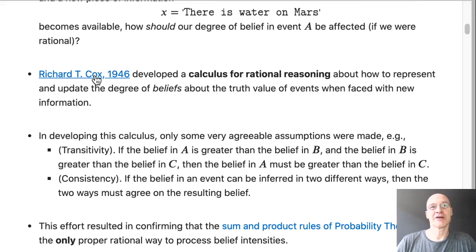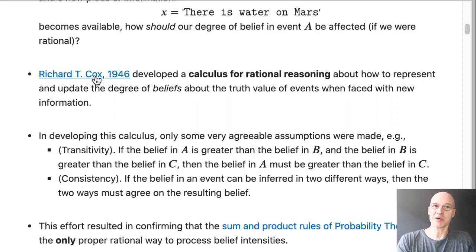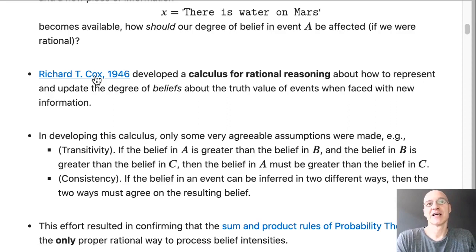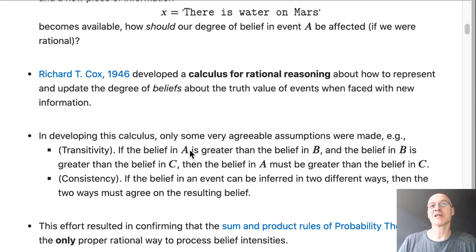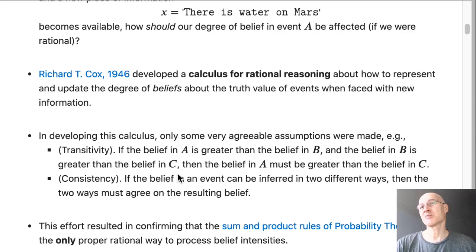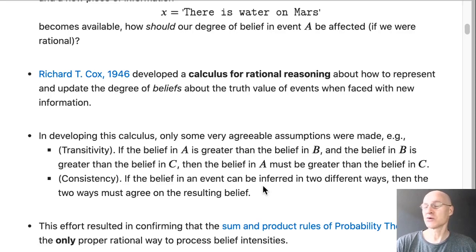In the past century, a fellow named Richard Cox derived a proper calculus for this. He said: if I assume this interpretation of probability as a state of knowledge, a belief, and I want a calculus for how to update this belief with new information, this calculus must obey certain agreeable assumptions. For instance, if the belief in statement A is greater than belief in B, and belief in B is greater than belief in C, then belief in A must be greater than C — that makes sense. Or if belief in an event can be inferred in two different ways, the two ways must agree on the resulting belief.